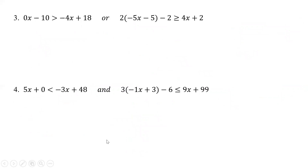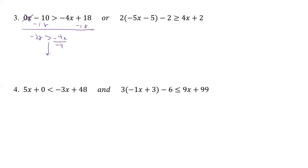A couple more. So it looks like here we have 0x and then minus 10, greater than minus 4x plus 18. Well, if that's 0x, that means it doesn't have anything — so it's gone. So let's subtract 18. We have negative 28 is greater than negative 4x. Divide by negative 4 — that flips the inequality. And divide by negative 4 gives us x. 28 divided by 4 is 7, and those are going to be positive, so x is less than 7.